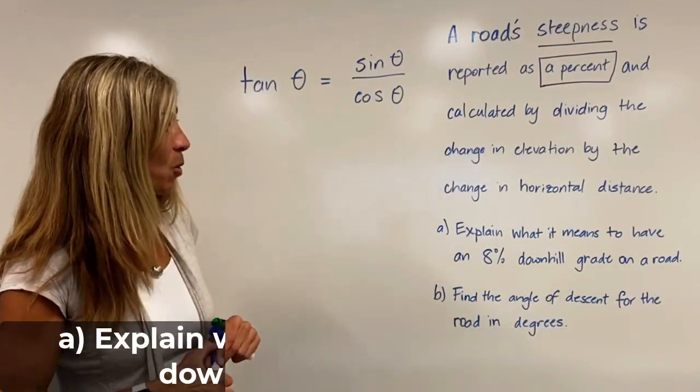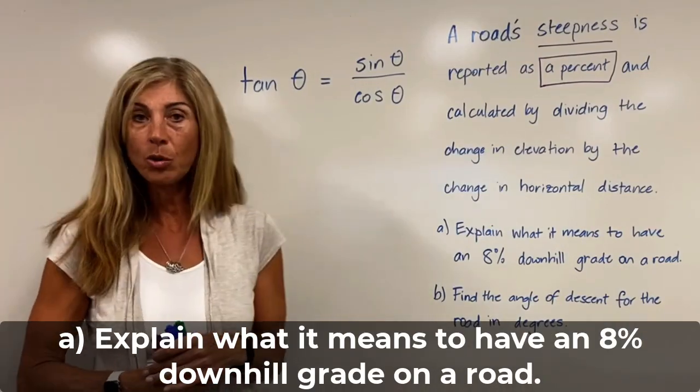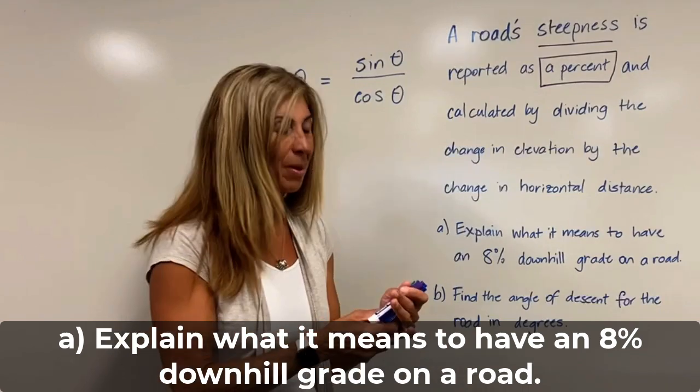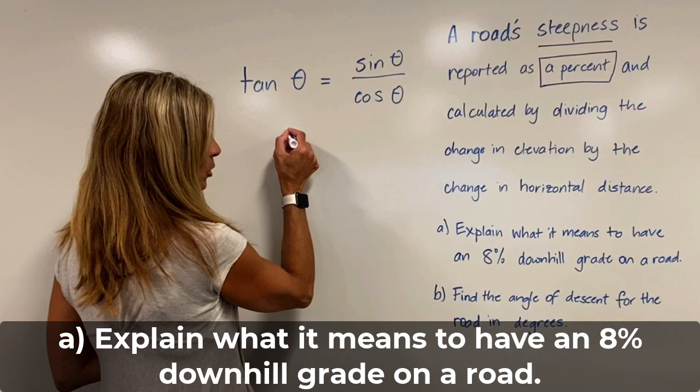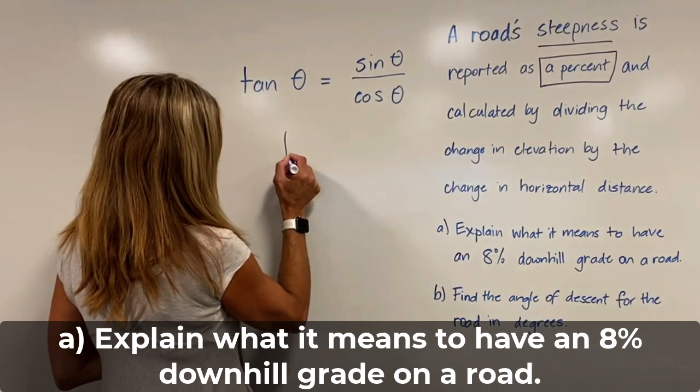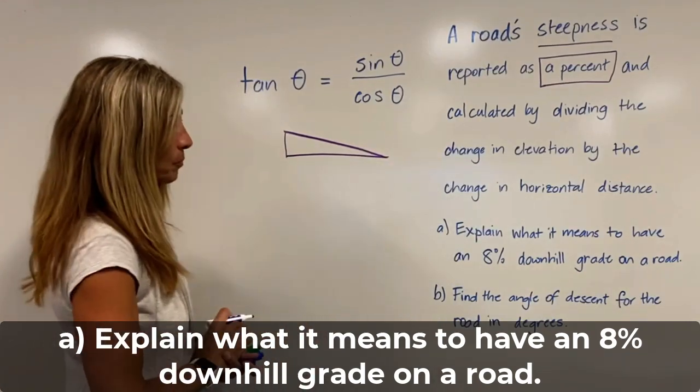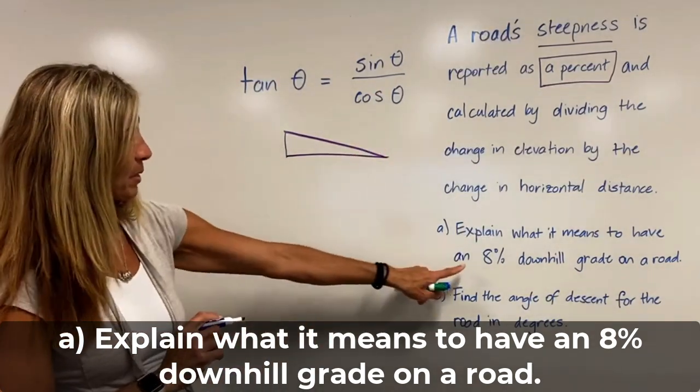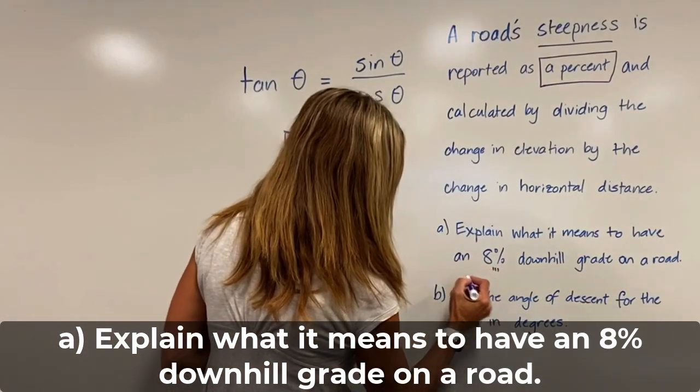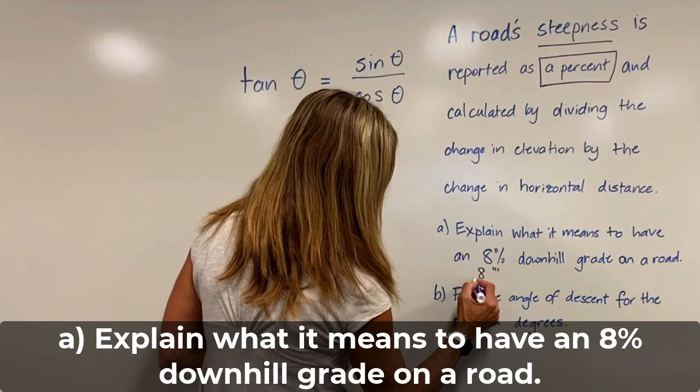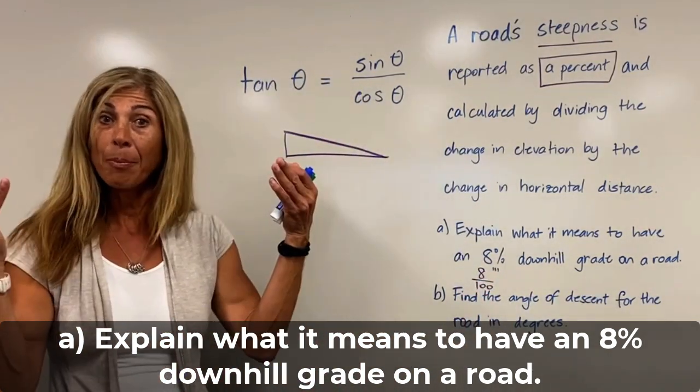Here's the question. Explain what it means to have an eight percent downhill grade on a road. As always, best to always draw a diagram. An eight percent downhill grade. So I'm going to draw a downhill and think about our eight percent. How can we rewrite our eight percent? Well this would be equivalent to saying eight over 100. Again, let's apply.